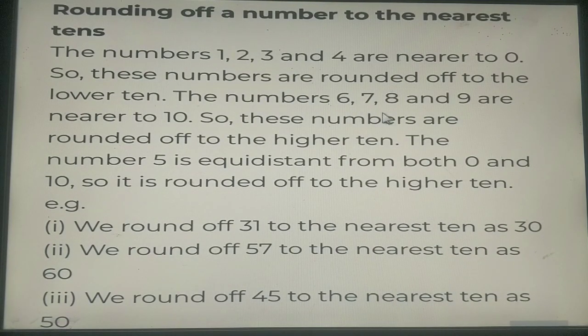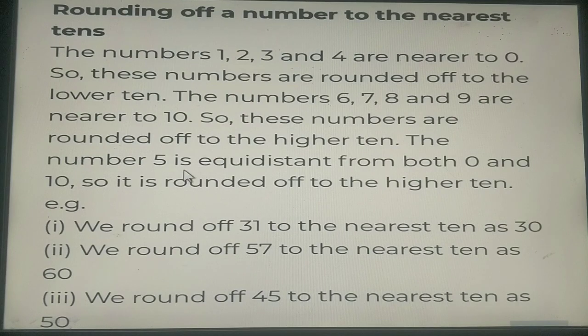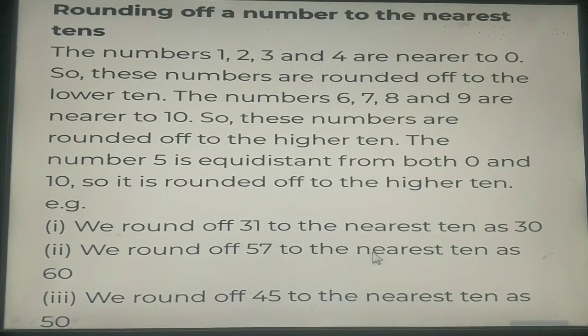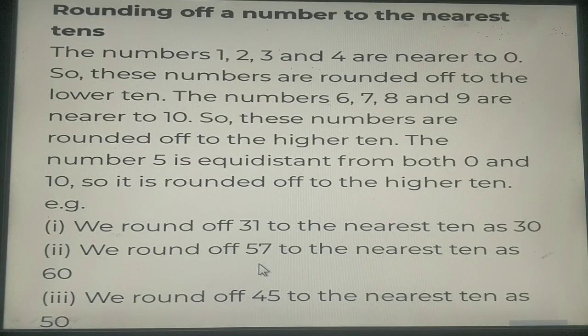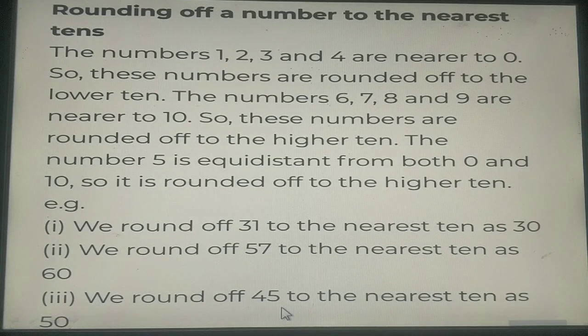The numbers 6, 7, 8 and 9 are nearer to 10. So these numbers are rounded off to the higher 10. Now the number 5 is equidistant from both 0 and 10. So it is rounded off to the higher 10. For example we round off 31 to the nearest 10 as 30. We will round off 57 to the nearest 10 as 60. And 45 would be rounded off to as 50.